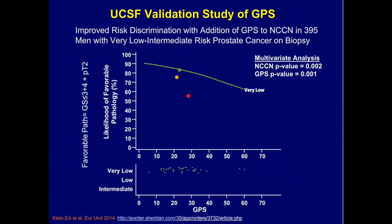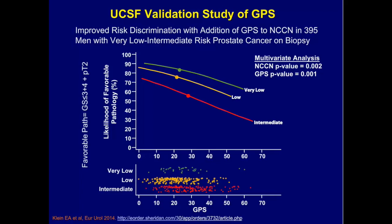Another test you heard about this morning is Oncotype DX, which looks at a 17-gene panel spanning multiple pathways associated with metastasis and death in prostate cancer. Importantly, it can be applied to a needle biopsy and be predictive of advanced pathology — unfavorable features — regardless of where you biopsy the prostate, which is an important consideration.